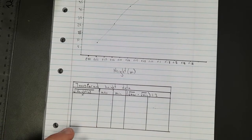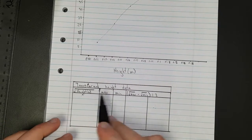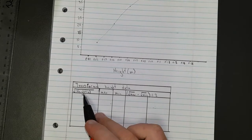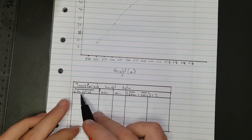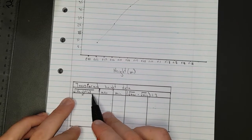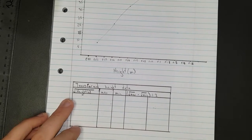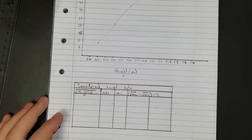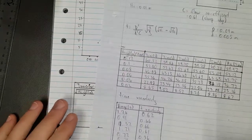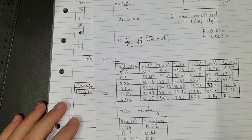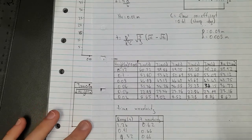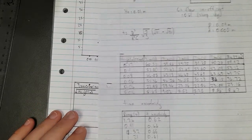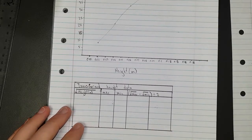So what I've set up is a table called transformed height data, and in my first column I've just literally got square root of height. So what I'm going to do — I've already done this on another piece of paper — it's just going to square root the first height, so square root of 0.12, then square root of 0.1, 0.08, 0.06, and so on and so forth.